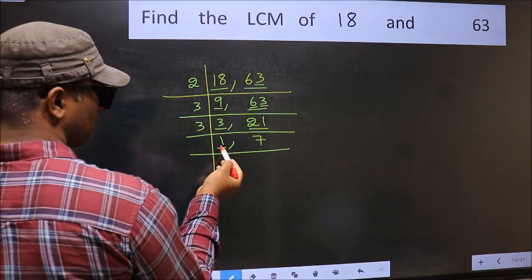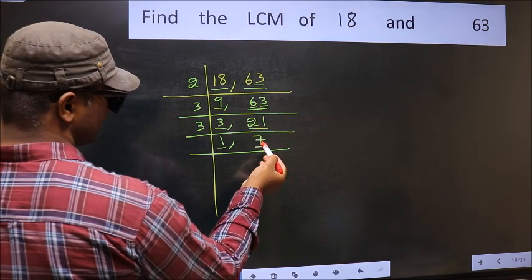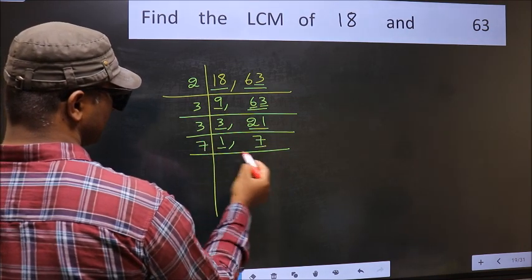Now we got 1 here. So focus on the next number 7. 7 is the prime number, so 7 ones is 7.